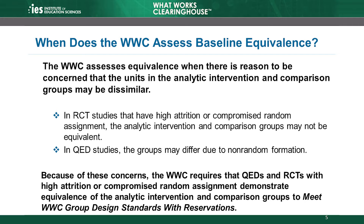Therefore, we make no assumptions about their similarity at baseline. Because of these concerns about the similarity of the groups and the potential for bias if the groups are different, the WWC requires QEDs and RCTs with high attrition or compromised random assignment to demonstrate that the intervention and comparison groups were equivalent on observable characteristics at baseline in order to meet WWC group design standards with reservations. At best, these studies can only demonstrate equivalence on observable characteristics, and we don't know how much the groups may differ on unobservable characteristics. Therefore, these studies cannot receive the WWC's highest rating of meets WWC group design standards without reservations.